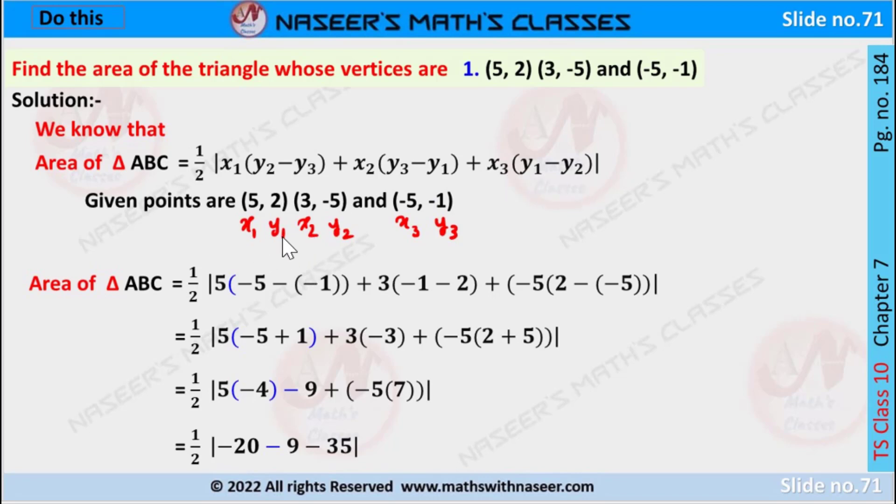x₁, y₁ are 5, 2 and x₂, y₂ are 3, -5 and x₃, y₃ are -5, -1.